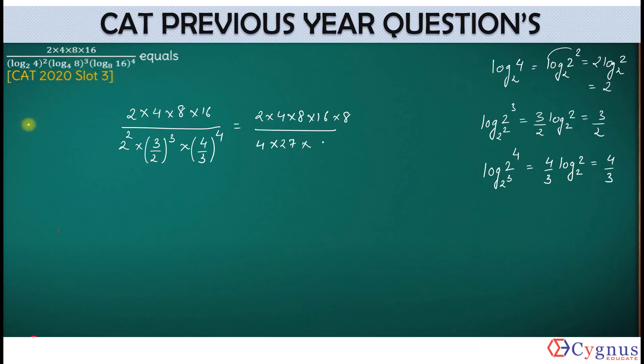Then the next one is 4 to the power 4, which is 2 to the power 8. 2 to the power 8 is what? 256. Divided by 3 to the power 4, which is equal to 81, will come in the numerator. So I need to simplify this only.